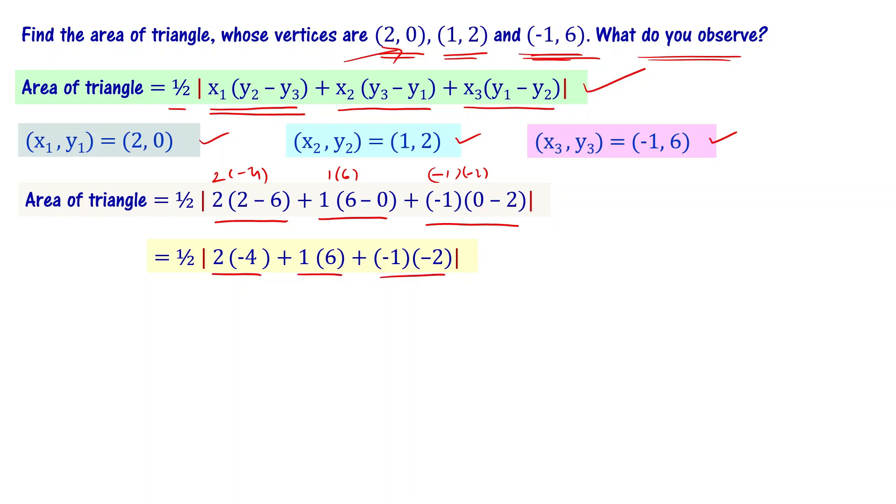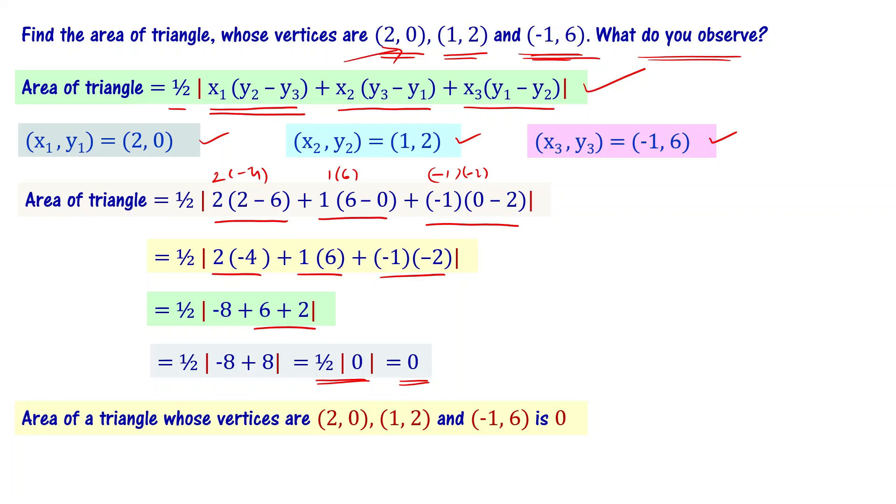So we can write it as half times modulus of -8 plus 6 plus 2. This can be now written as modulus of 0, half times modulus of 0 that is equal to 0. So what is the area of the triangle? Area of the triangle with these vertices is going to be 0. That's what is one of the answers. We are asked to find the area of the triangle and this is what it is. 0 is the area of the triangle.